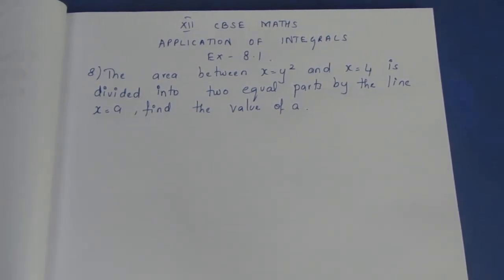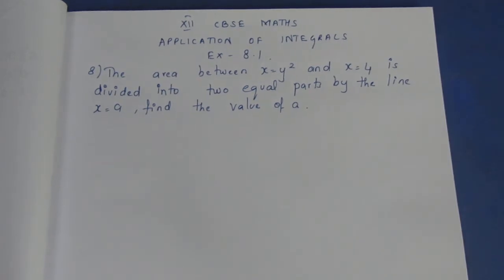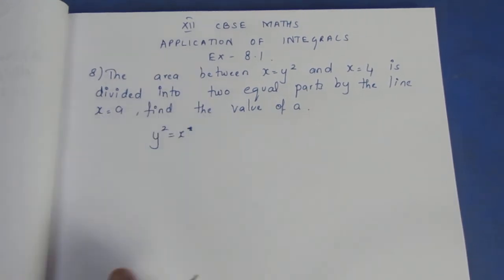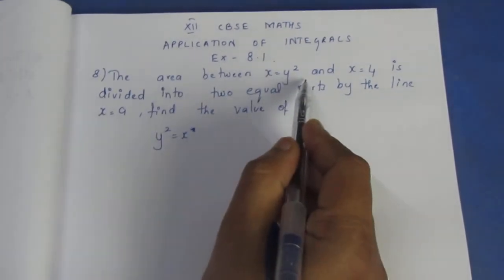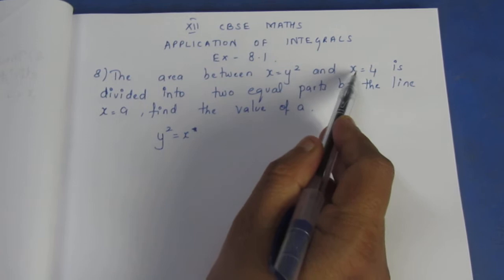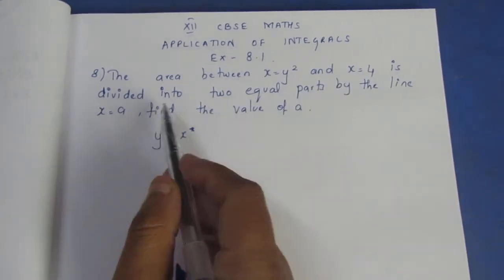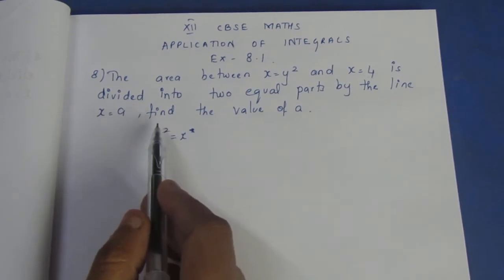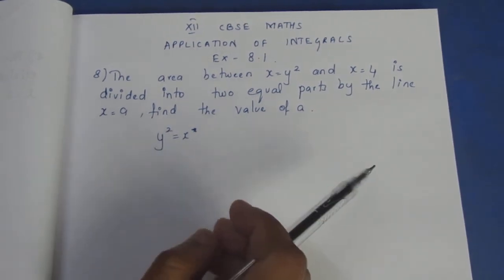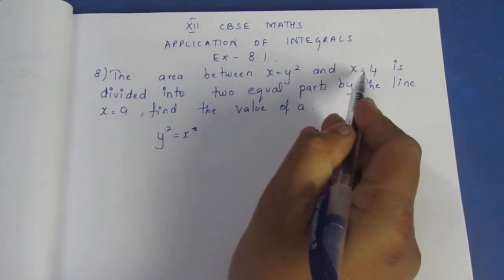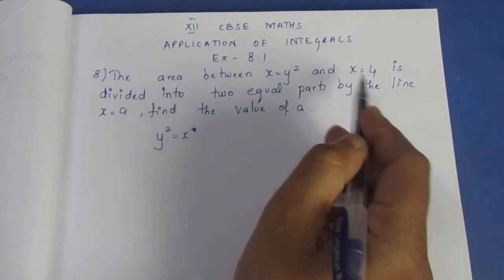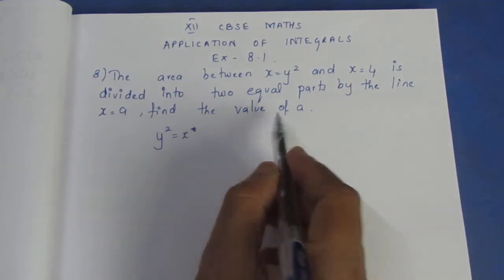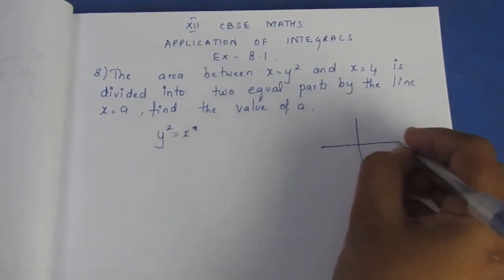Look at the question: the area between x equal to y square — that is, y square equal to x — is a parabola. x is equal to 4, and it is divided into 2 equal parts by the line x is equal to a. Find the value of a.